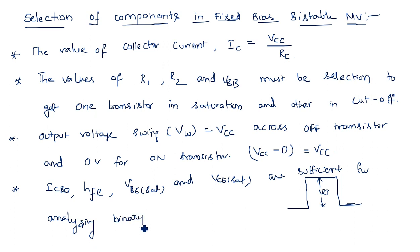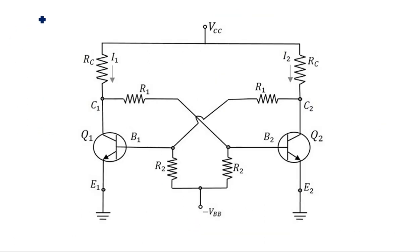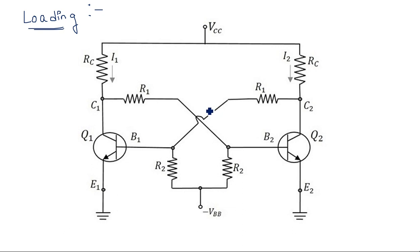The binary circuit is the bistable multivibrator. Along with this, we should also concentrate on the effect of loading. Sometimes the bistable multivibrator is used to drive other circuits — the output of this binary circuit can be connected to other circuits.